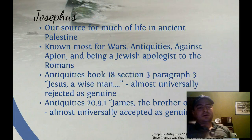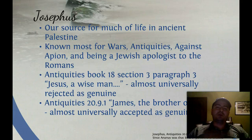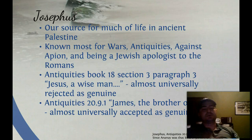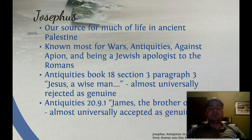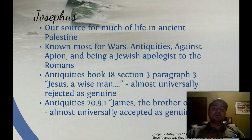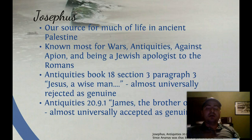Josephus is our source for much of ancient life in Palestine. He's the only historian of Palestine in the first century, so naturally he informs us of a lot of things going on in the New Testament, although he doesn't mention very much about Jesus at all. He is known most for his works called The Wars, The Antiquities, and Against Apion, and for being a Jewish apologist to the Romans.